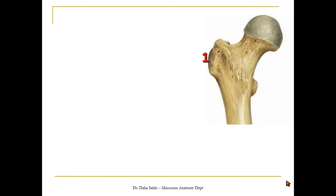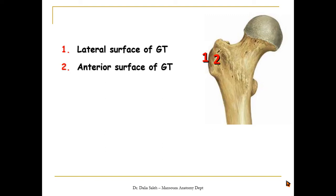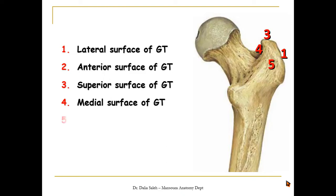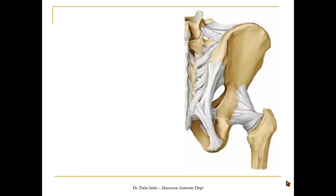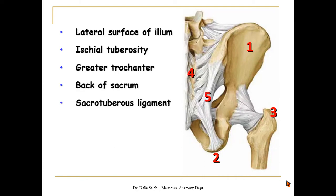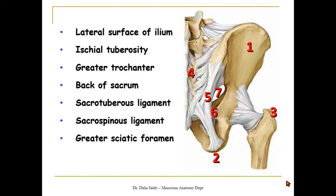Here is the upper end of the right femur seen from the anterior aspect. We can see a large bony prominence on the lateral side of the femur called the greater trochanter — this is its lateral surface and this is its anterior surface. If we rotate the femur and look at the back, this is the lateral surface of the greater trochanter, this is the superior surface, this is the medial surface, and this is the posterior surface. Below it lies the gluteal tuberosity. This picture shows the articulated pelvis and hip joints, including the lateral surface of the ilium, the ischial tuberosity, the greater trochanter, the back of the sacrum, the sacrotuberous ligament, and the sacrospinous ligament.